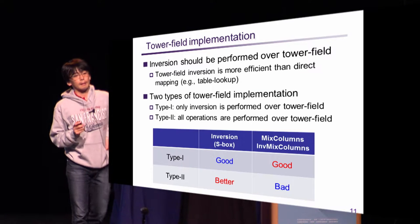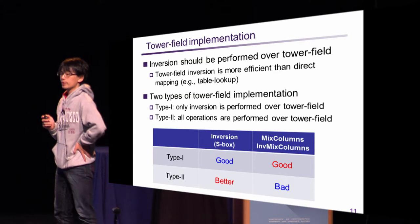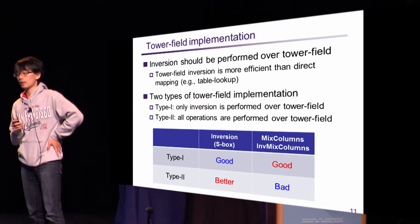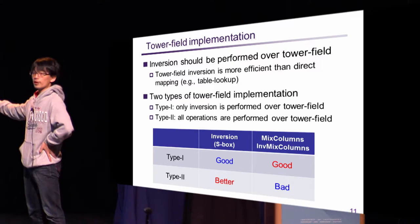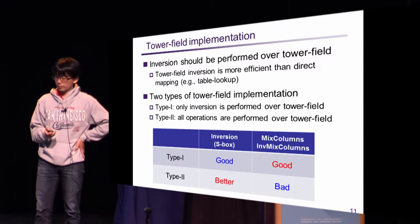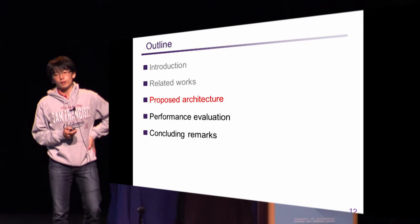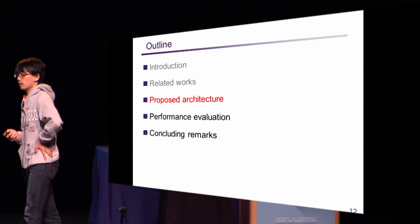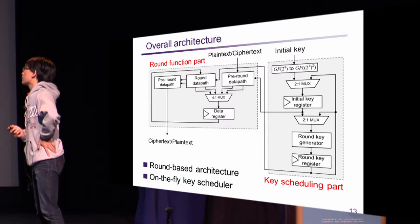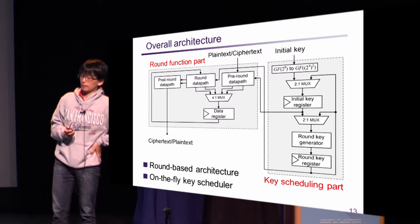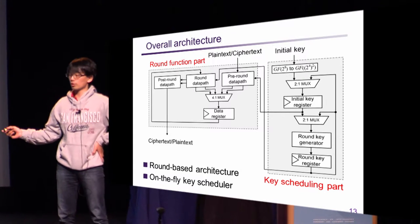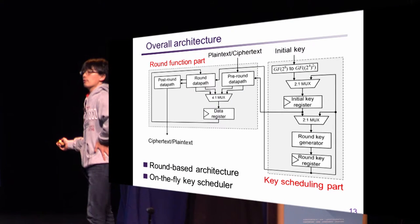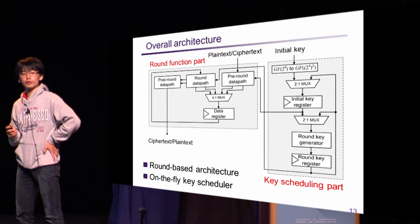However, tower field MixColumns and InvMixColumns would require more XOR gates because these operations were designed for the AES field. Now I show the proposed architecture. This is the proposed overall architecture, consisting of a round function part and a key scheduling part. First, I show the design of the round function part.